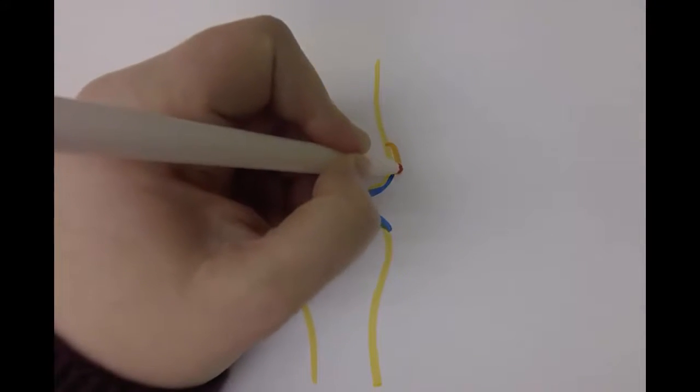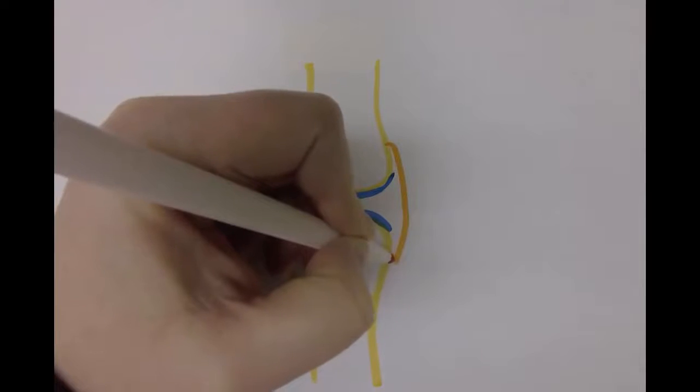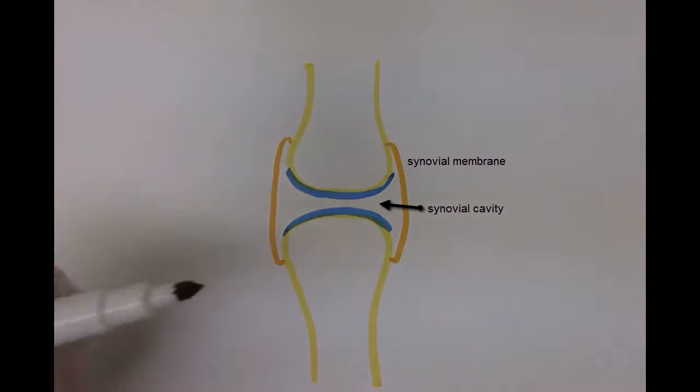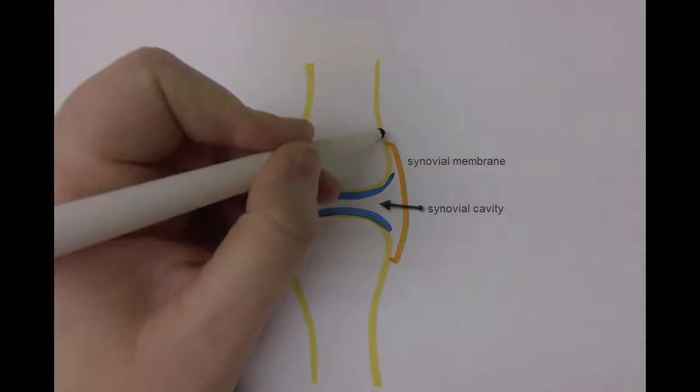Surrounding the bones we will find the synovial membrane. Synovial membrane surrounds the synovial cavity, which is the space filled with synovial fluid.